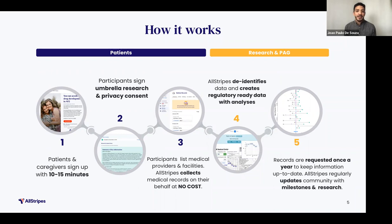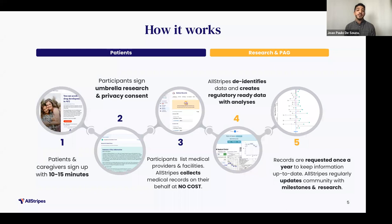Patients and caregivers are able to join our All Stripes platform by going to allstripes.com, finding your unique condition, and signing up — it takes about 10 to 15 minutes. Participants are then asked to sign an umbrella or broad general research consent form that gives consent to participate in minimal risk research. You'll then be asked to sign a privacy consent form. If you live in the United States, it's formerly known as a HIPAA consent form, which allows us to collect medical records on your behalf. Patients will also be asked to list medical providers and facilities. We collect your medical records on your behalf at no cost to either the families or the patient advocacy groups. Our team then de-identifies, anonymizes, and aggregates the data to create regulatory-ready data, which allows pharmaceutical companies and researchers to submit the data we've analyzed to the FDA.